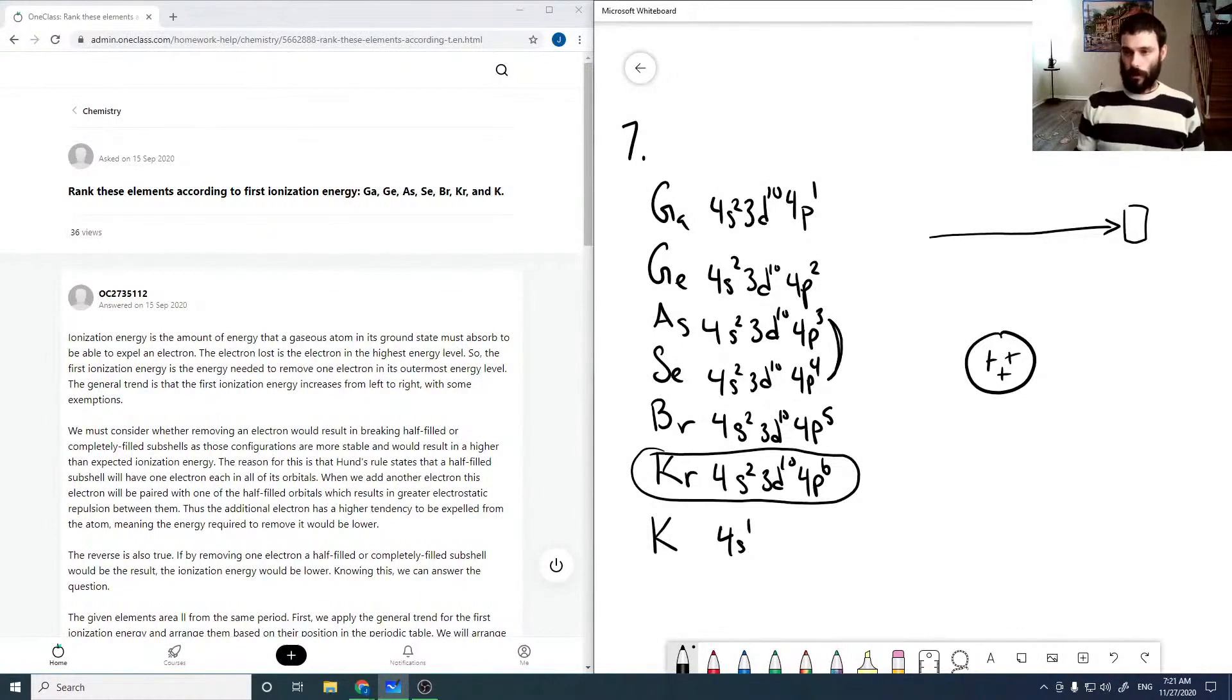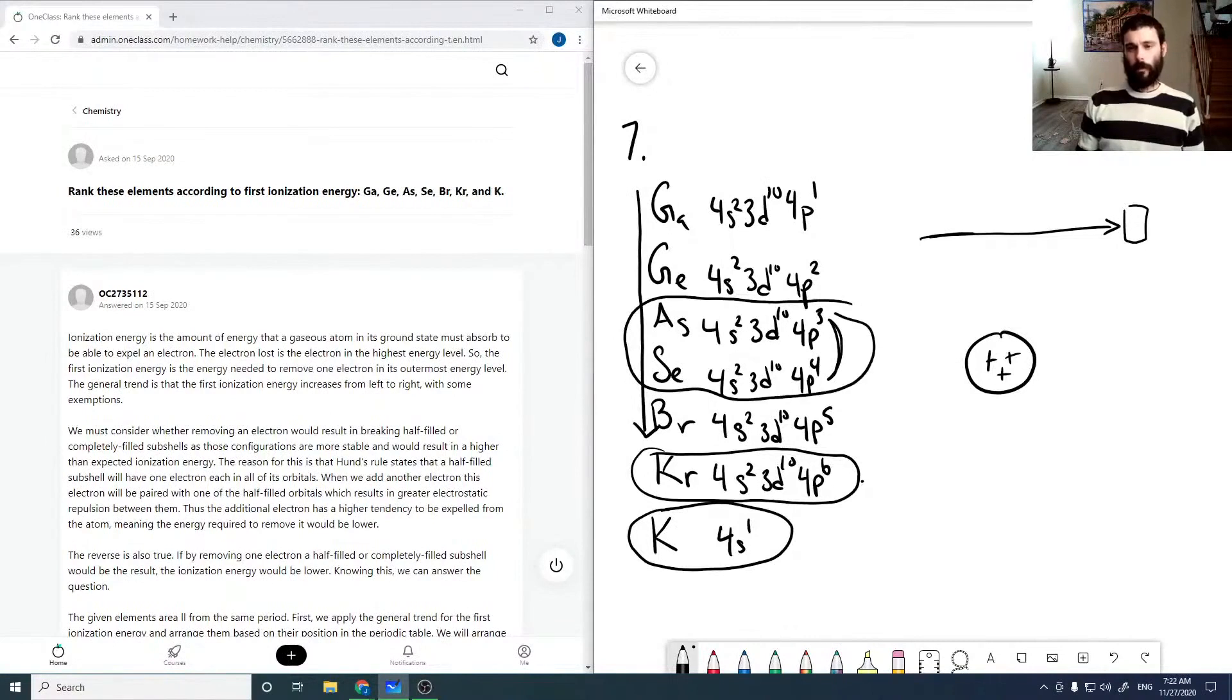So with this idea that it's going to increase across from the right, then we can see that potassium is going to be our lowest, krypton is going to be our highest. And then it should just increase down from there with arsenic and selenium swapping places because arsenic has a bit of stabilization due to the orbital being half-filled.